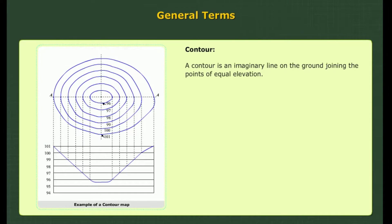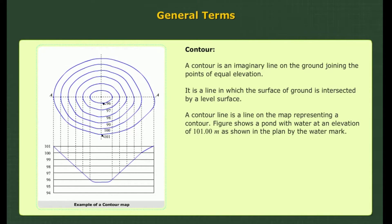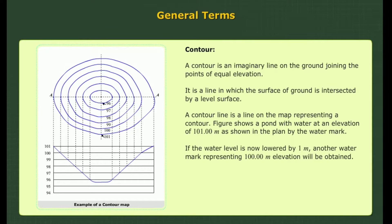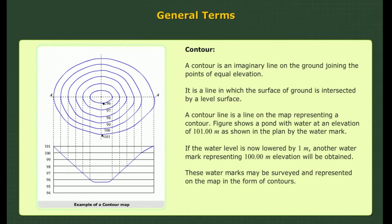A contour is an imaginary line on the ground joining the points of equal elevation. It is a line in which the surface of the ground is intersected by a level surface. A contour line is a line on the map representing a contour. For example, a pond with water at an elevation of 101.00 metres — if the water level is lowered by 1 metre, another watermark representing 100.00m elevation is obtained. These watermarks may be surveyed and represented on the map as contours. A topographic map presents a clear picture of the surface of the ground.